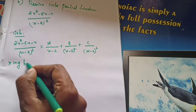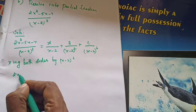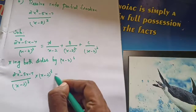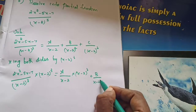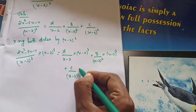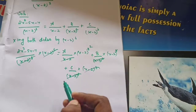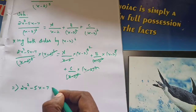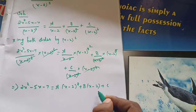Multiplying both sides by x minus 2 the whole cube: 2x squared minus 5x minus 7 divided by x minus 2 whole cube times x minus 2 whole cube equals A by x minus 2 times x minus 2 whole cube, plus B by x minus 2 whole squared times x minus 2 whole cube, plus C by x minus 2 whole cube times x minus 2 whole cube. After cancellation, we get: 2x squared minus 5x minus 7 equals A into x minus 2 whole squared plus B into x minus 2 plus C. Take this as equation number 2.